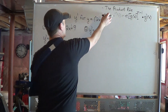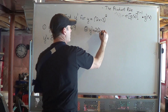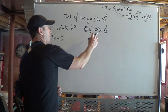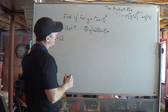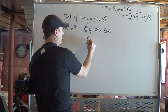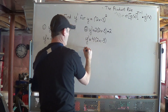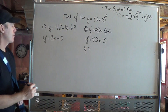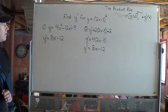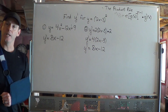The second way is to use the chain rule, since we have a function taken to a power. Bring the 2 down, times 2x minus 3 to the power of 1, then times the derivative of the inside. The derivative of 2x is 2, and the derivative of negative 3 is 0. So 2 times 2 gives 4, and y prime equals 4 times 2x minus 3. Expanding that out: 4 times 2x is 8x, and 4 times negative 3 is minus 12. Same answer!